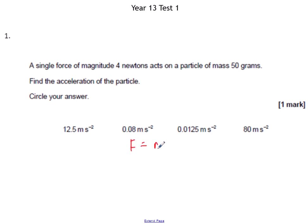This first question was applying F equals MA. So the force was 4, the mass converted to kilograms is 0.05. And then if you divide through, you should get 80 metres per second squared for the acceleration. Most of you managed to get that one right.